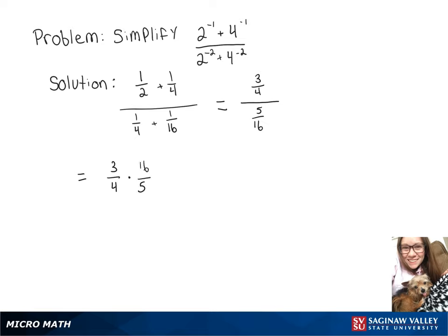And then 4 goes into 4 one time, and 4 goes into 16 four times. And that will give us our final answer of 12 over 5.